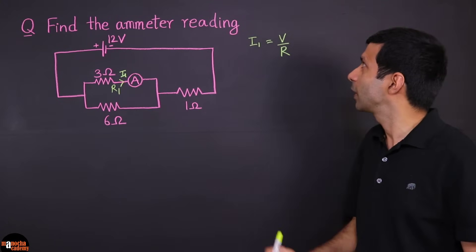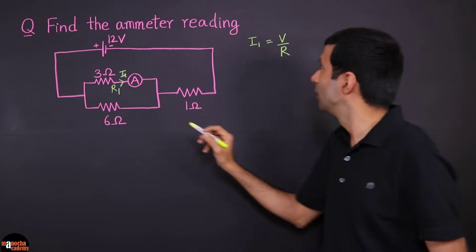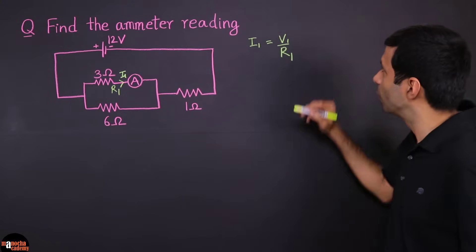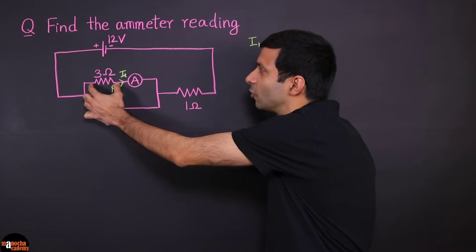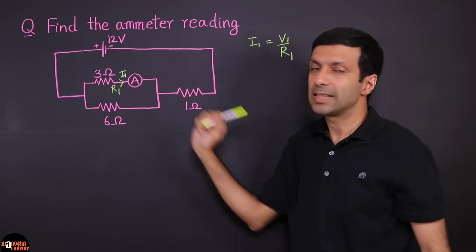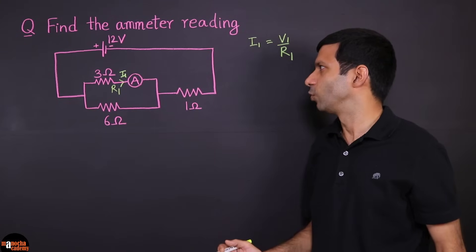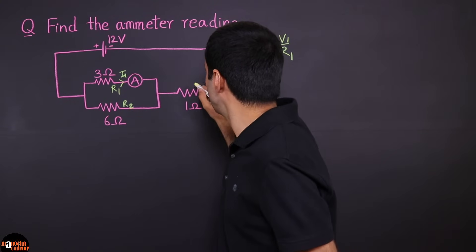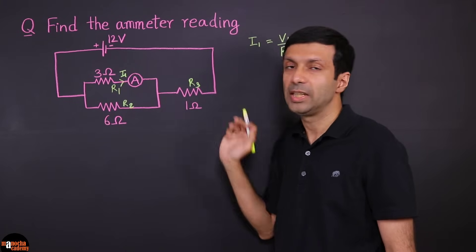Because Ohm's law can be applied to the entire circuit or to each part. So if you're applying it to this resistor R1, then we should write I1 equals V1 by R1. Now what is V1? It's the voltage across the 3 ohm resistor, so it need not be the full voltage of 12 volts. We know R1 is 3 ohm, but we don't know V1, the voltage across R1. The best thing to do, since we have 3 resistors R1, R2, and R3, is to find the equivalent resistance.